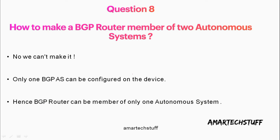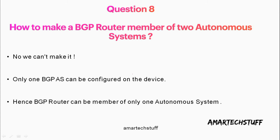Question number eight: how to make a BGP router a member of two autonomous systems? This is a bit of a tricky question. The answer is: you can't, because only one BGP AS can be configured on a device. Hence, a BGP router can be a member of only one autonomous system. This is a question the interviewer may ask just to check your BGP concepts.